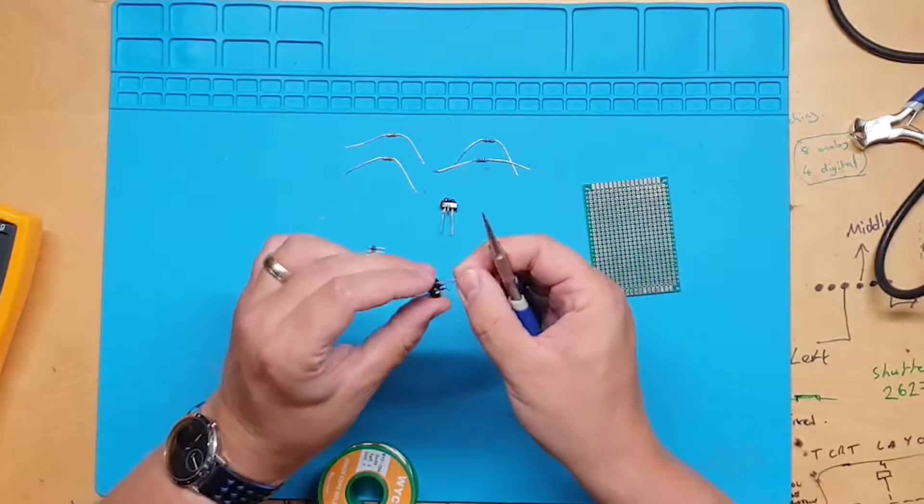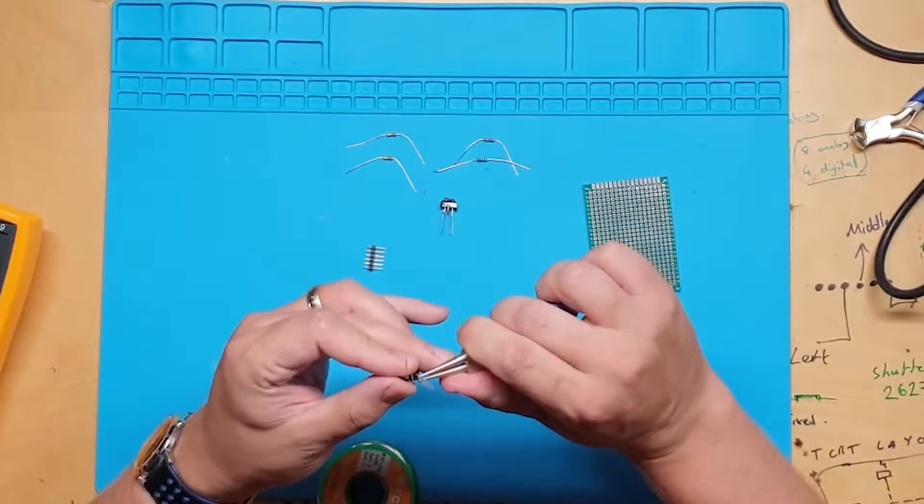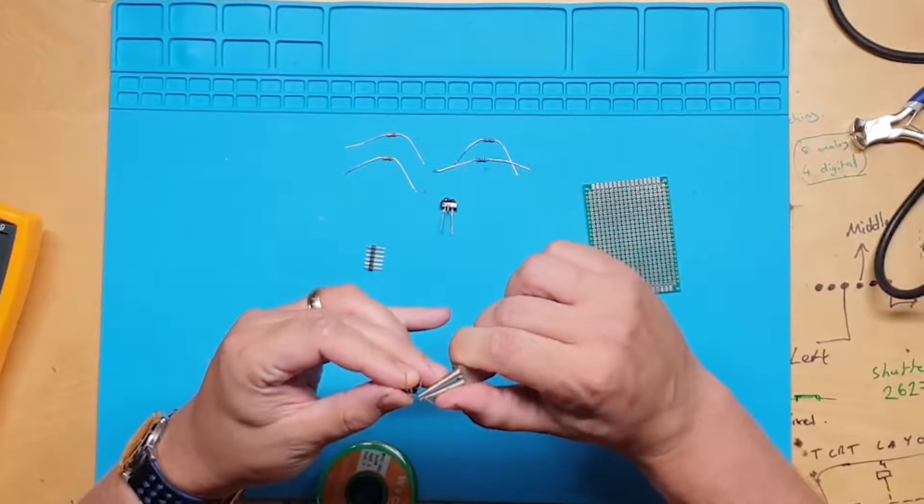In later tutorials we will use the odometry to create a kinematic model allowing Mipper to understand its surroundings in a more detailed way.